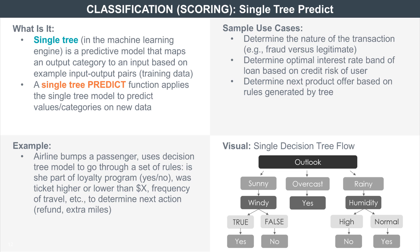A single tree is a classification function used to categorize data into specific buckets. For example, you could categorize adults over the age of 18 as student, employed, unemployed, or retired. But classification is not easy, and data needs to be analyzed first with existing known classifications to understand how they are classified.